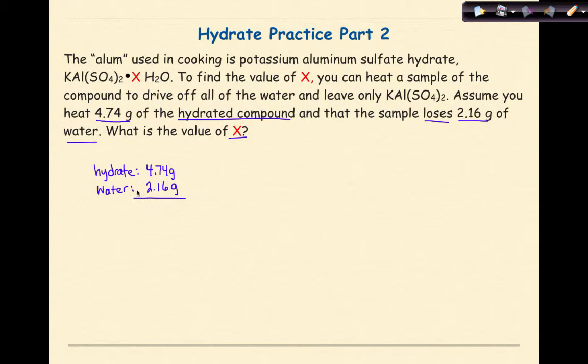We need to take the difference because in a hydrate problem, we need both the mass of water and the mass of the anhydrous salt. Right now we just have the water mass. Subtracting 2.16 grams from 4.74 grams gives 2.58 grams of anhydrous salt.